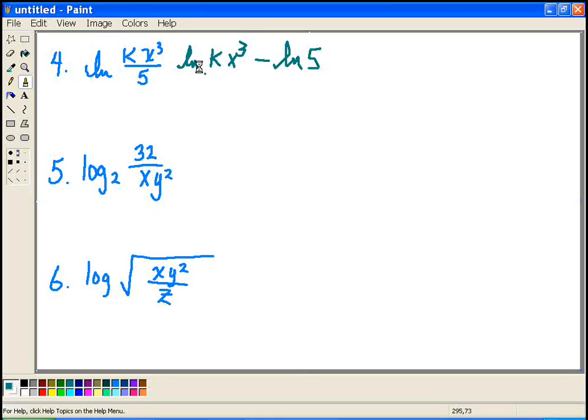Now, I'm not quite done because notice I've now got the natural log of a product, k times x cubed. So I can now further break this up. I'm multiplying, so now this goes hand in hand with addition. So I can break this up into the natural log of k, plus the natural log of x cubed, and then minus my natural log of 5. Can't really do anything else with that natural log of 5. So it's just going to come along.